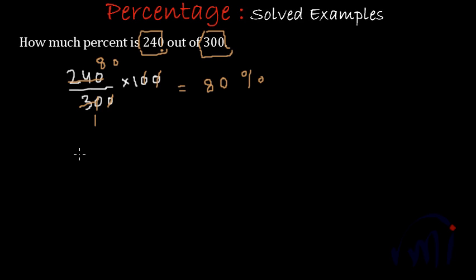So we will get the fractional value of 240 out of 300 which will be 240 by 300 and to convert this into percent what we do we multiply it by 100. And when we solve it we are getting 80%. So this is the way how we find the percent value of one quantity with respect to the other quantity.